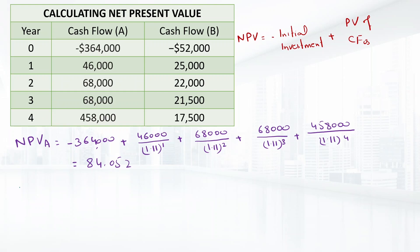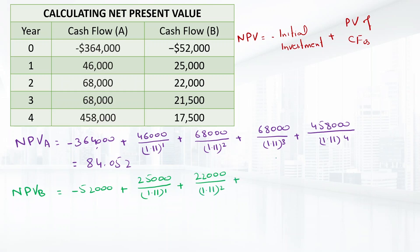For Project B: NPV = −52,000 + 25,000/1.11¹ + 22,000/1.11² + 21,500/1.11³ + 17,500/1.11⁴. The NPV equals 15,627. Since Project A's NPV of 84,052 is higher than Project B's NPV of 15,627, according to the NPV criterion we accept Project A.